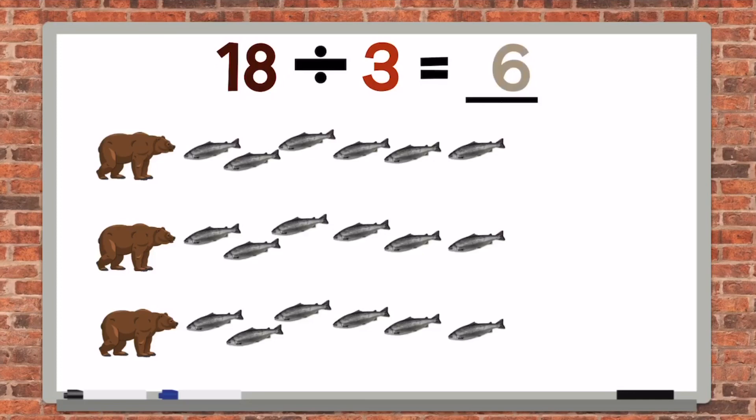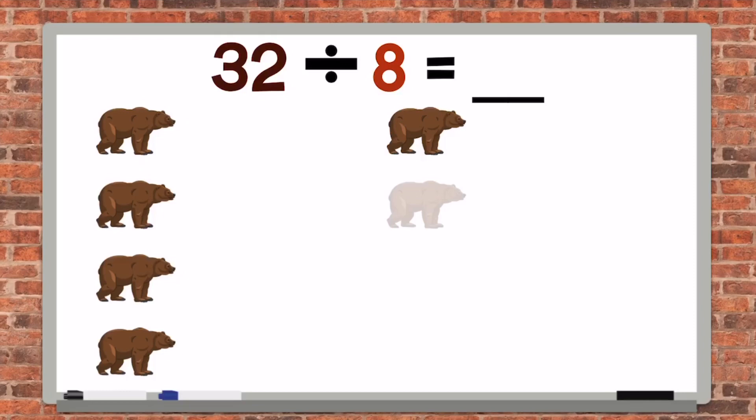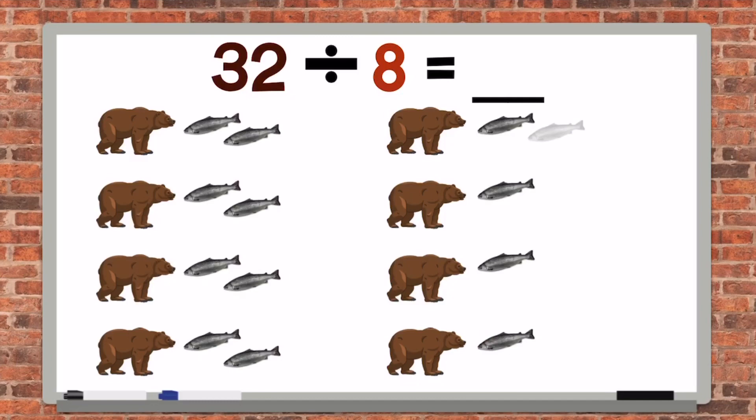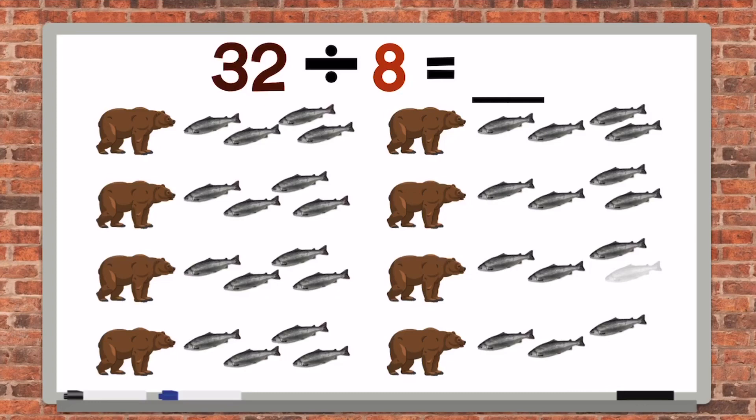32 divided by 8. We have 8 grizzly bears this time. We have to share or divide 32 salmon with them. We will count to 32 until we run out. We notice that each grizzly bear is going to get 4 salmon. 32 salmon divided by 8 grizzly bears equals 4 salmon each.